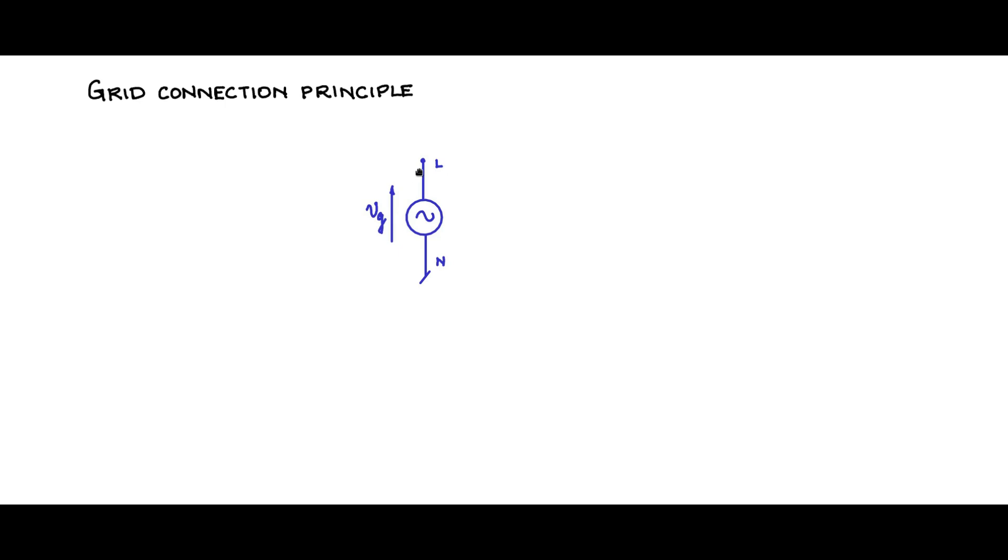To this grid, you cannot connect another voltage source in parallel. You can definitely connect a current source in parallel. The current source is a high output impedance source and can pump current at a preset level into the grid, and therefore power is pumped into the grid.